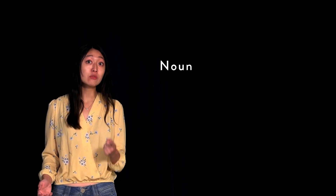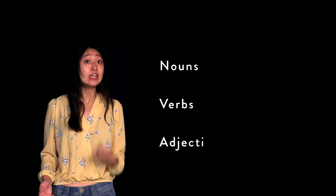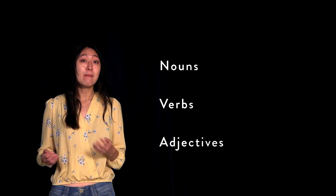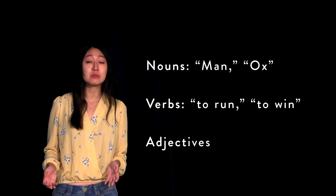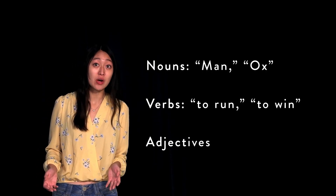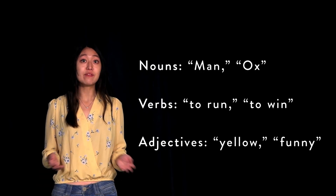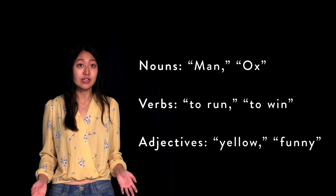Here are some examples of terms: man, ox, runs, wins, yellow, that funny comedian, that book on the shelf, etc. Grammatically, terms fall into three classes: nouns, verbs, and adjectives. Man and ox are nouns. Runs and wins are forms of the verbs to run and to win. Yellow and funny are adjectives.